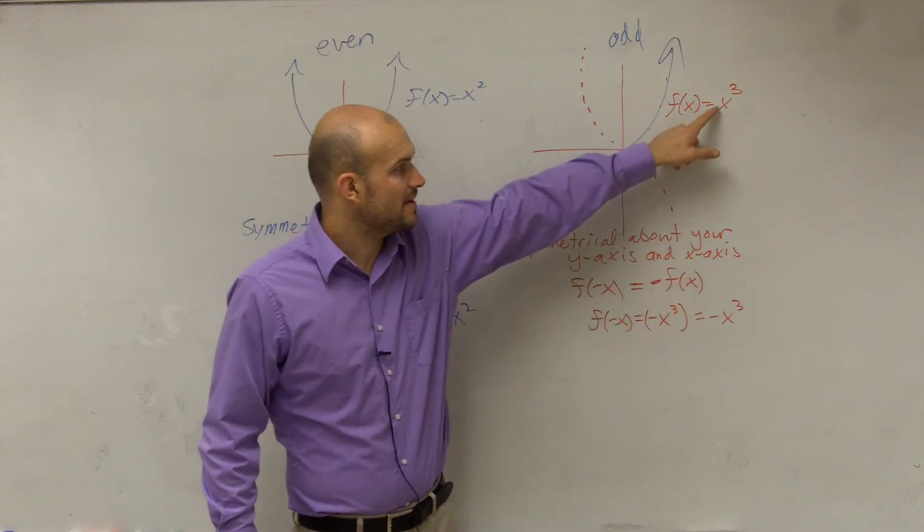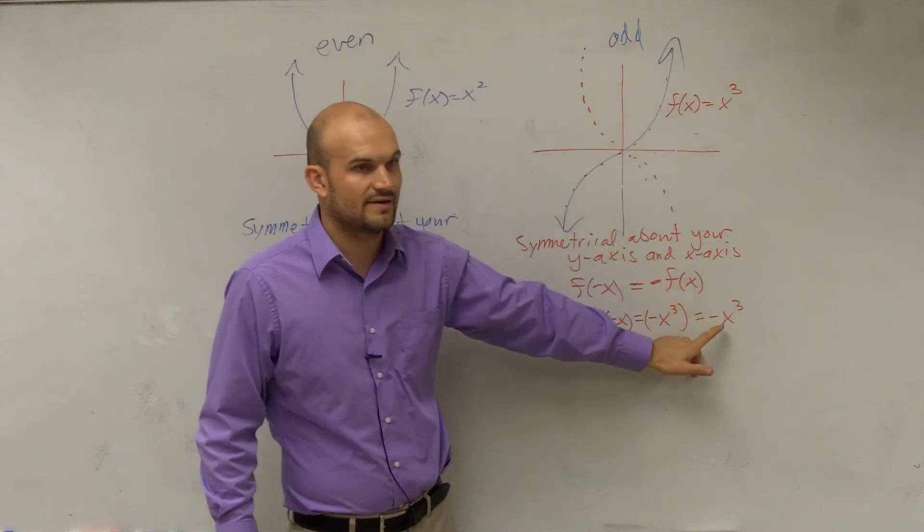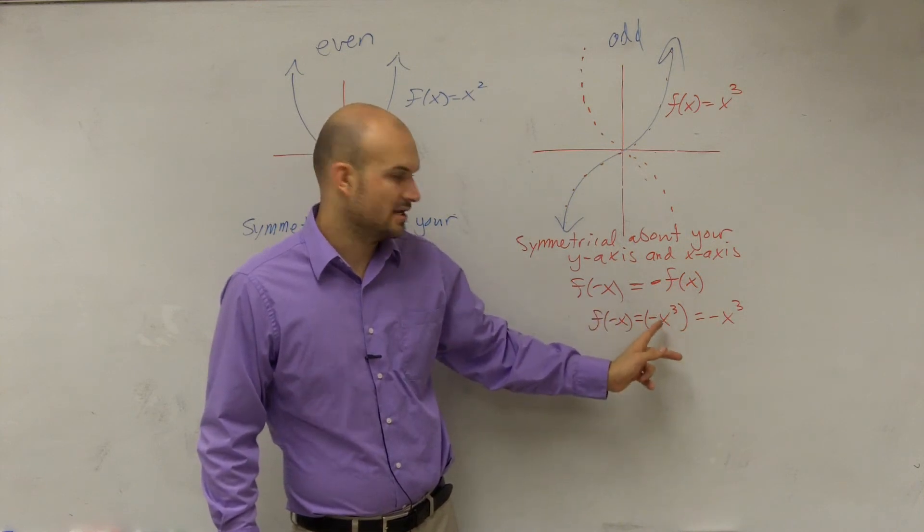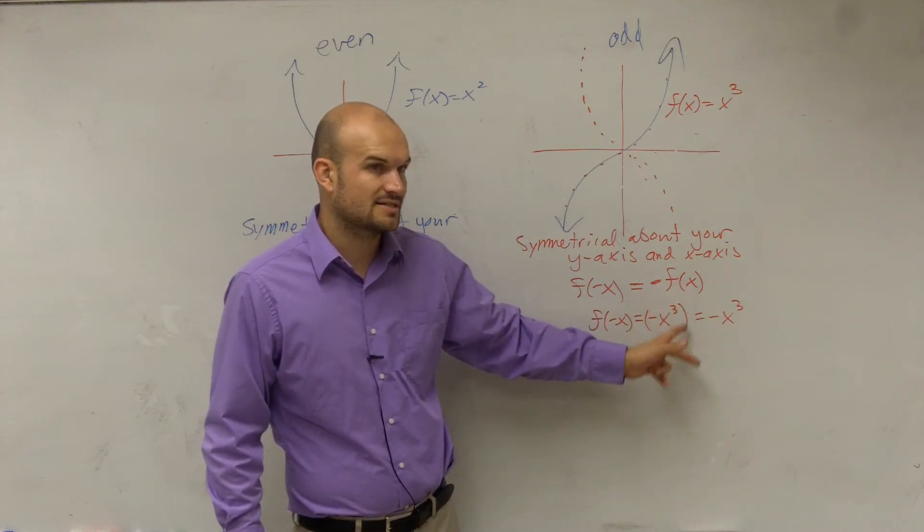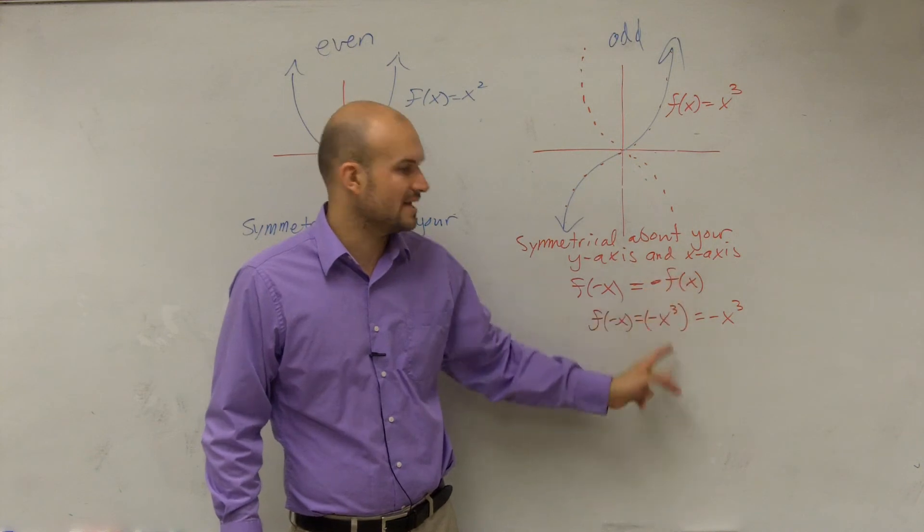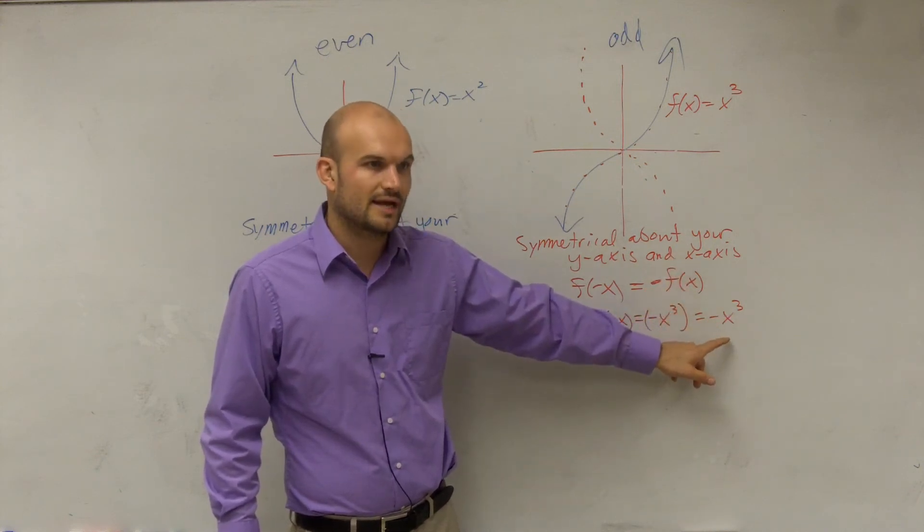That one's x squared and that one's negative x squared. Right, a negative x cubed. Negative x times negative x times negative x is going to be your negative x cubed.